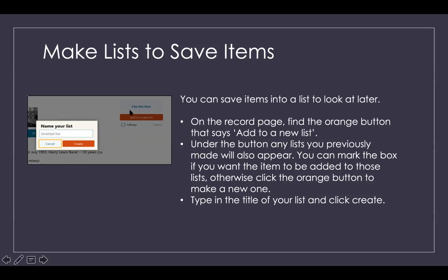Above the add-to-list button is a 'Cite This Item' link. Click that to get citation information if you're using this in academic work. They give a general citation with most of the information you'll need, but it doesn't always account for format differences — like MLA versus APA versus Chicago — so don't take it at face value, but it will give you most of what you need.